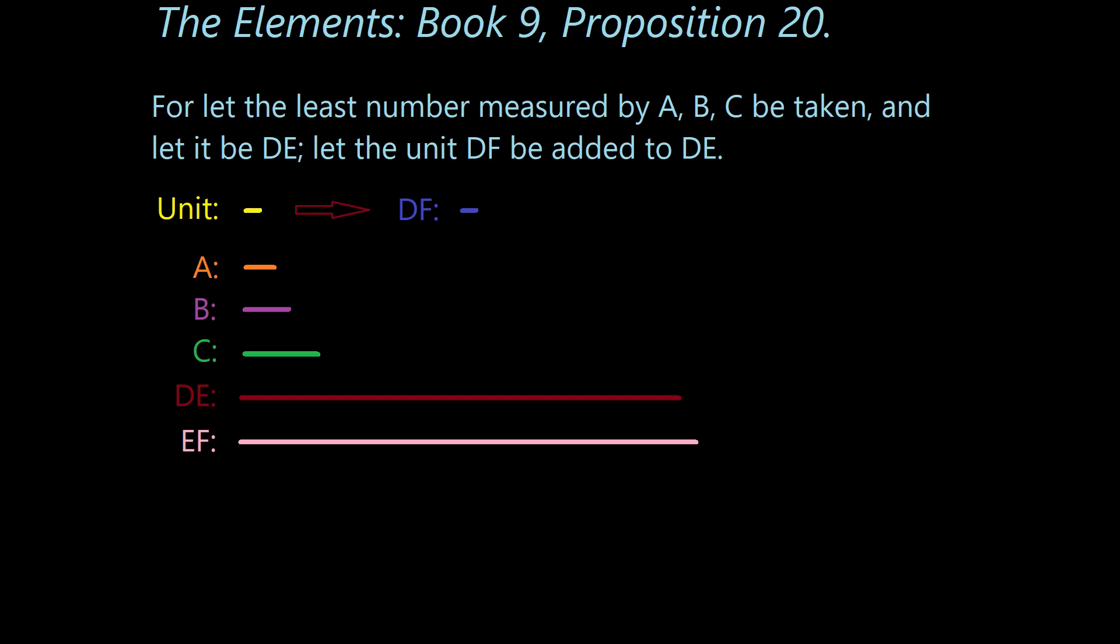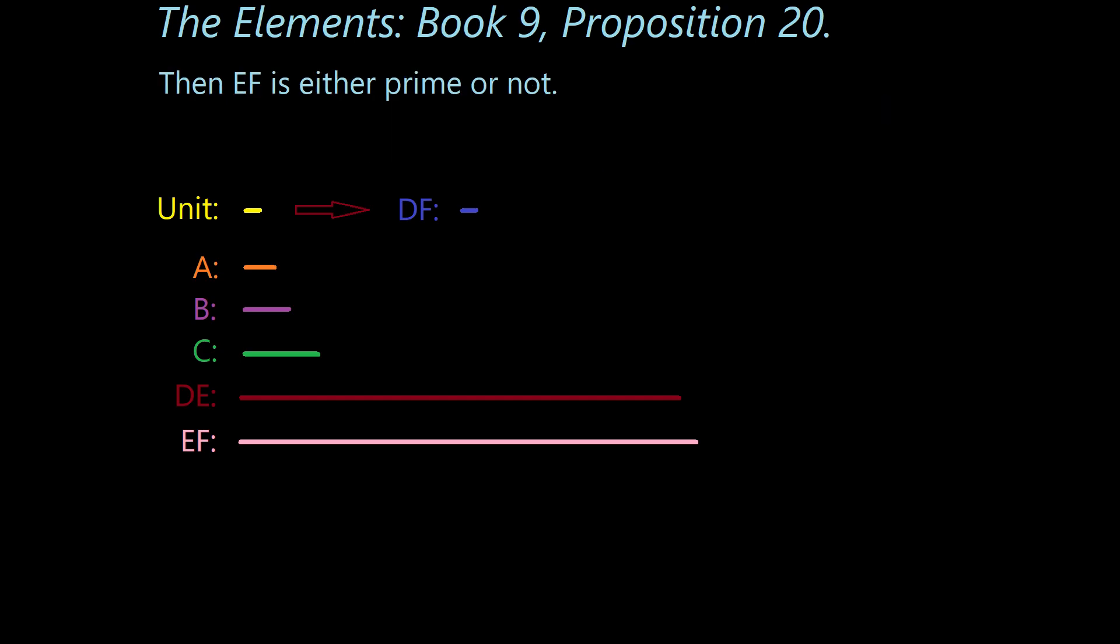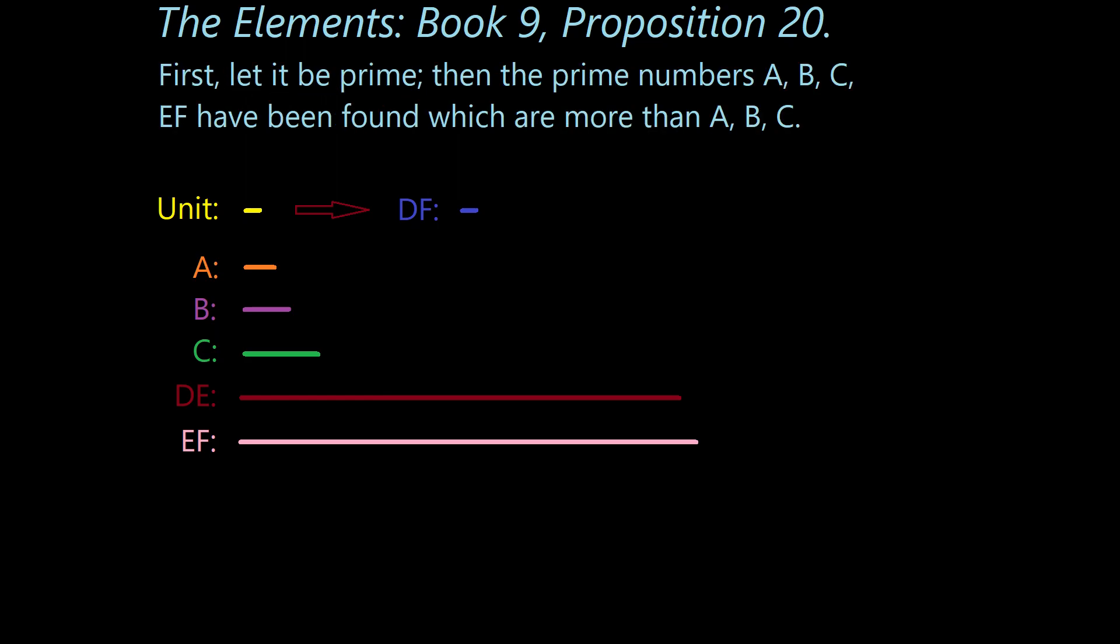So we get to the next step. Then EF is either prime or not. Now, that's a pretty straightforward sentence. It's true. It's either prime or not. So on to the next step. First, let it be prime. Then the prime numbers A, B, C, EF have been found, which are more than A, B, C. In other words, if EF is itself a prime number, then we have found another prime number. And this means that we have proven that there are more prime numbers than A, B, C, which is what we started with.